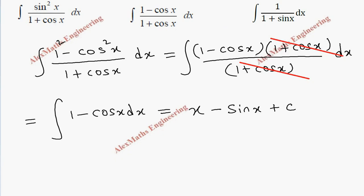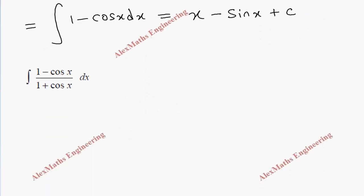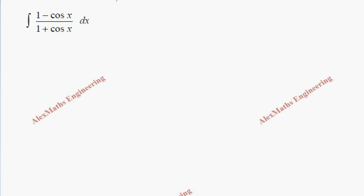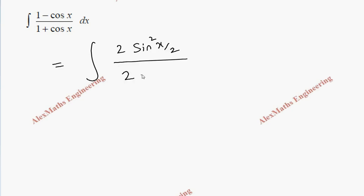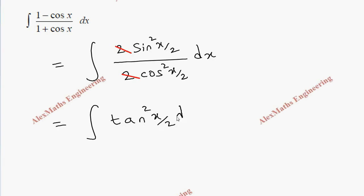For the second question, we have the integration of (1 minus cos x) divided by (1 plus cos x). We use the direct formula: 1 minus cos x equals 2 sin squared(x/2), and 1 plus cos x equals 2 cos squared(x/2). We cancel the 2s, leaving the integral of sin squared(x/2) over cos squared(x/2), which is tan squared(x/2) dx.